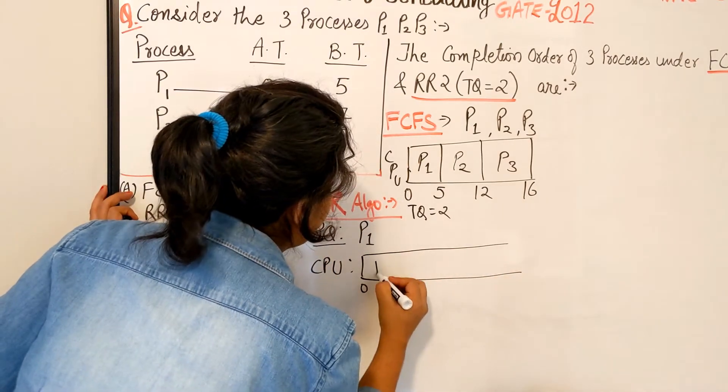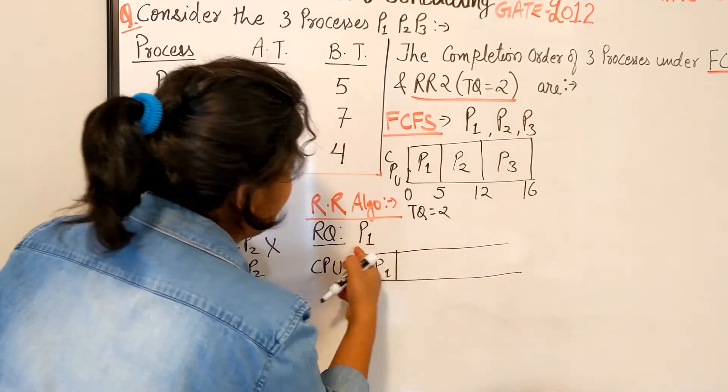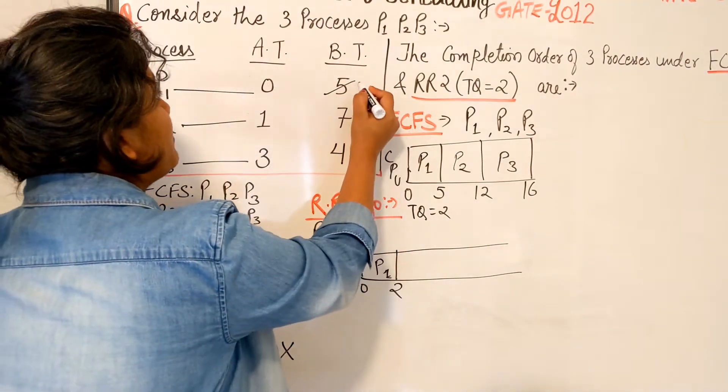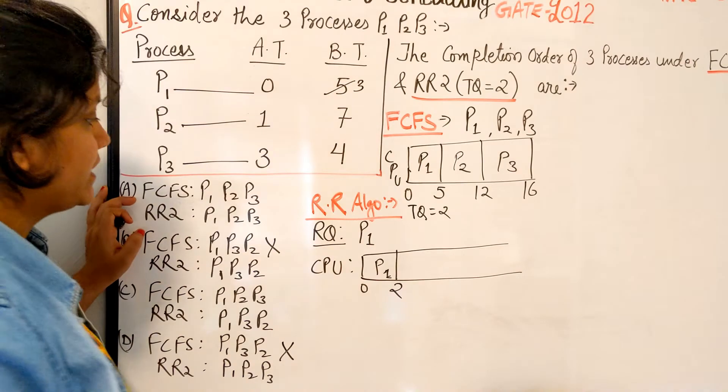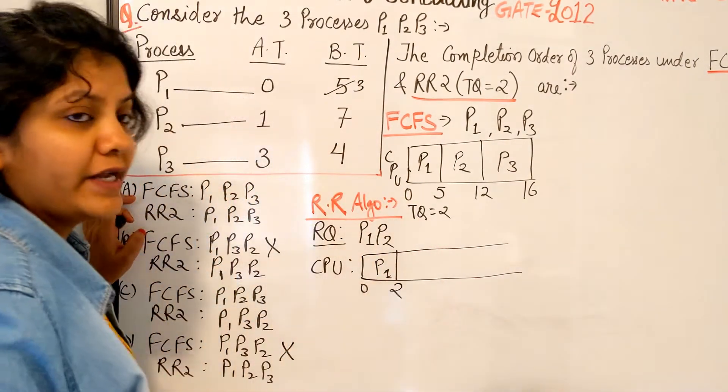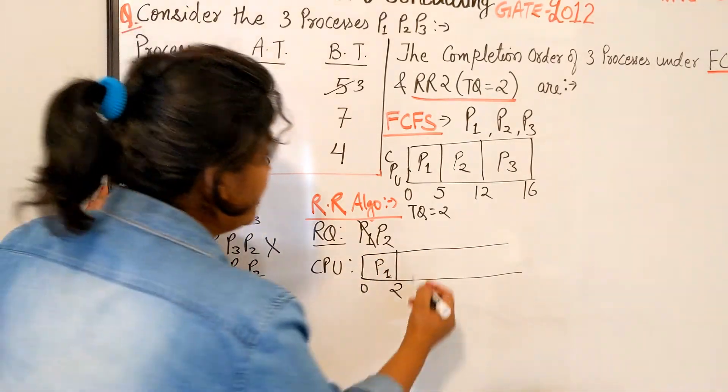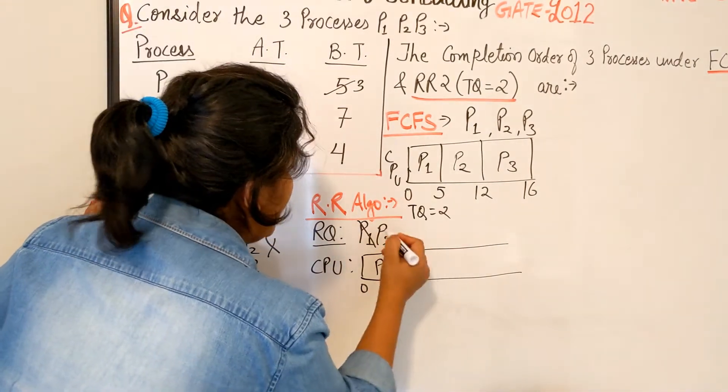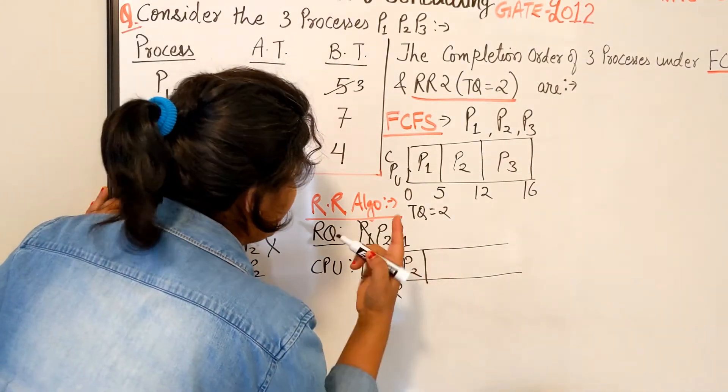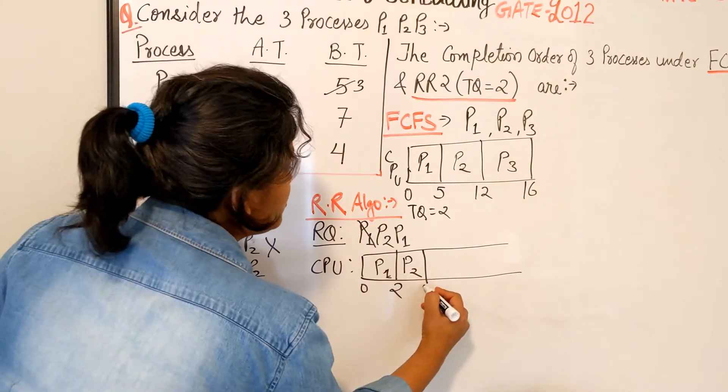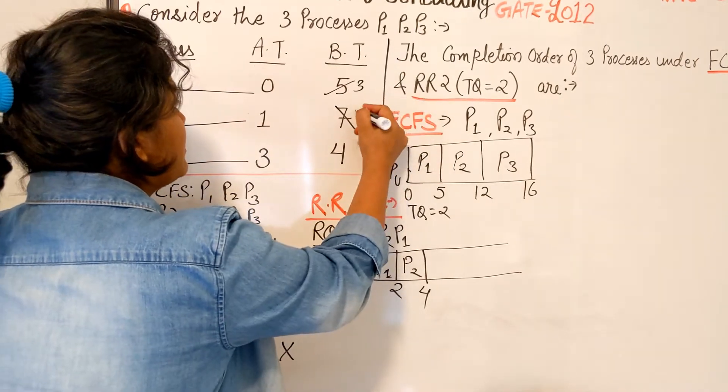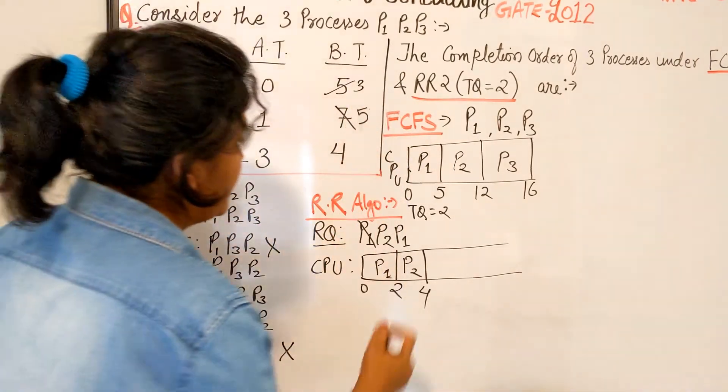At time 0, I just have P1 in the ready queue, so I execute it. The quantum is 2, so it's going to take 2. By time 2 we have P2 in the system, so P2 will come and sit in the ready queue. P1 has executed one of its cycles, P2 goes, and P1 needs more so it comes after P2. Now P2 executes for 2 quantum, so 2 plus 2 equals 4.